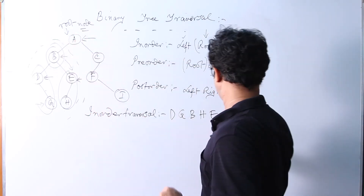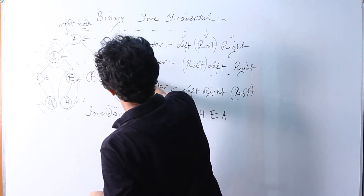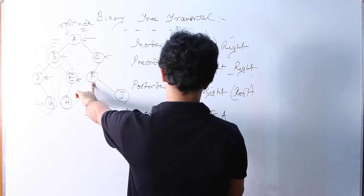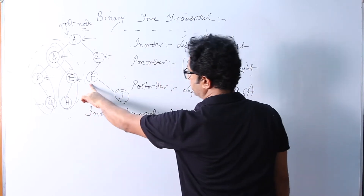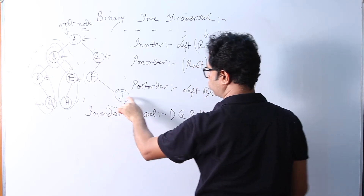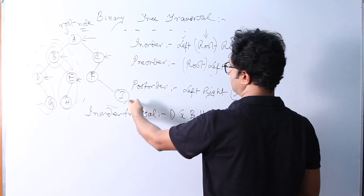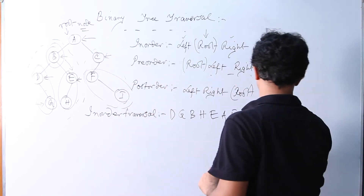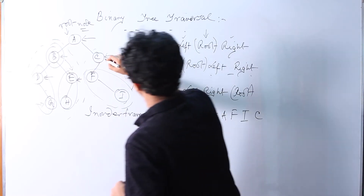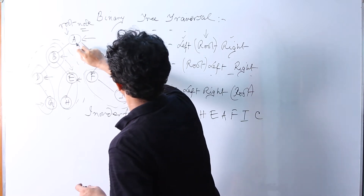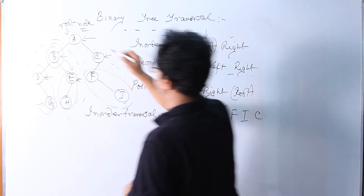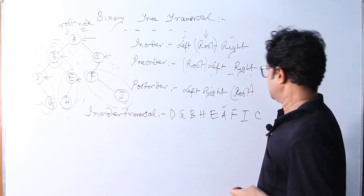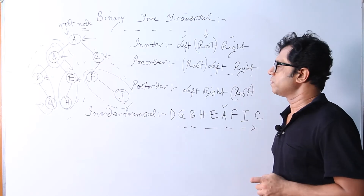We come to the root node A, print A, then go to the right subtree of A. Say left, root, right — there is no left, so we come to F and print root F. Then go to the right: say left, root, right — no left, print root I, no right, backtrack. I has been printed, F has been printed. Left subtree of C has been printed, so we print C and go to its right — no right subtree, backtrack. A has already been printed. In this way the entire binary tree has been traversed in in-order traversal.